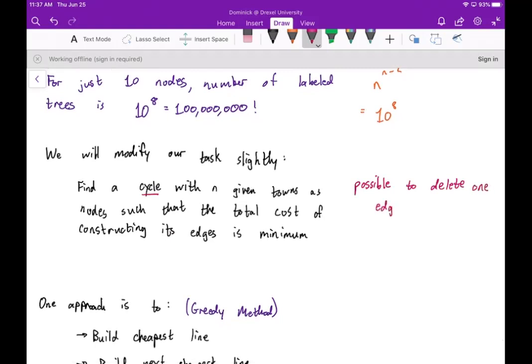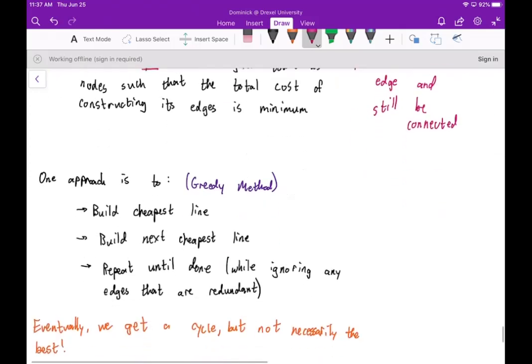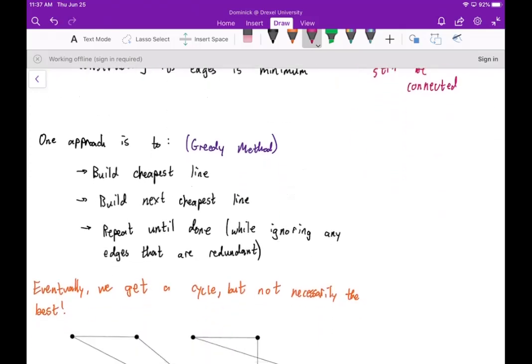Now the reason why we're going to consider a cycle is because now it's possible to delete one edge and still be connected. You can imagine why this would be important in the context of something like connecting a group of n towns, because for some reason if one line were to be damaged, we would still be able to complete the network here.